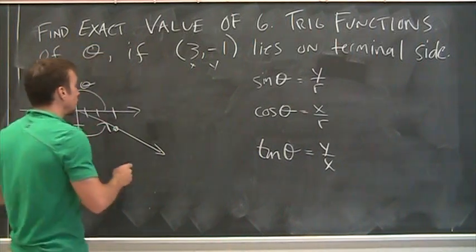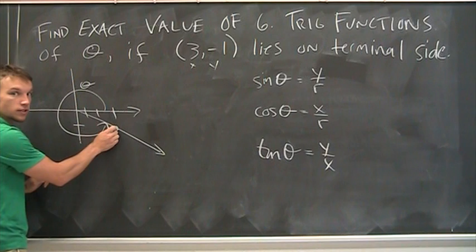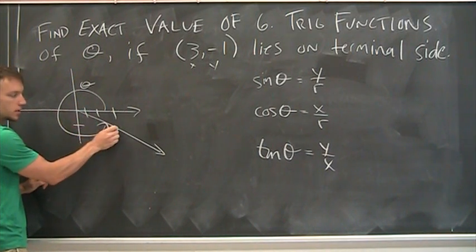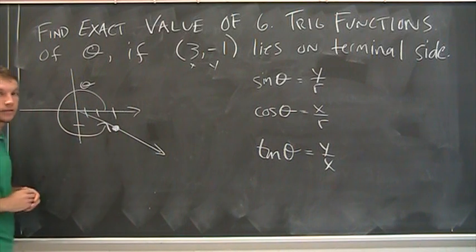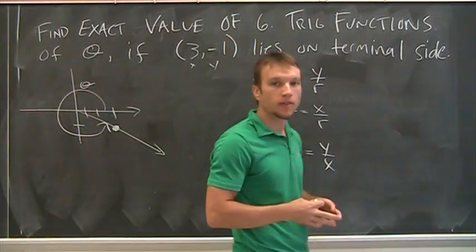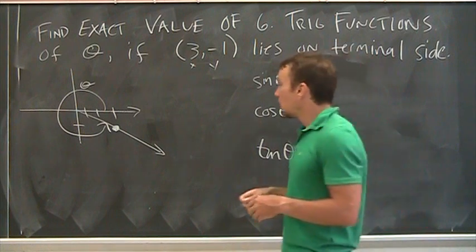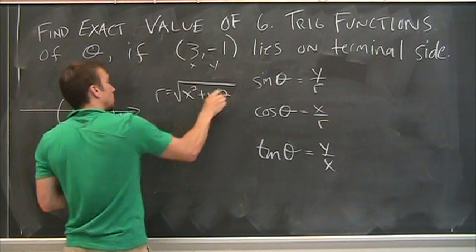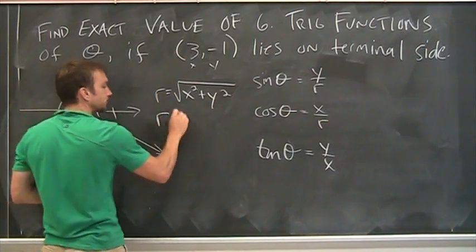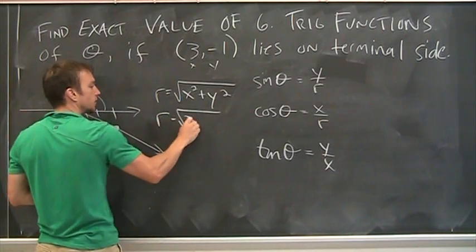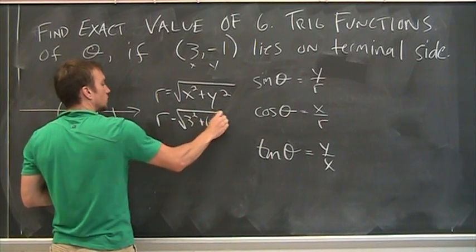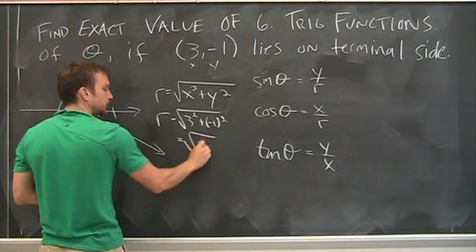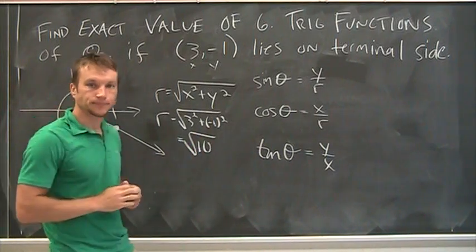So again, we need to find r, and r is simply the distance. This is just right triangle trigonometry. r is just the distance from the origin to that point, right? So basically, I could just draw a right triangle. It's really the Pythagorean theorem, right? r is the square root of x squared plus y squared, meaning it's the square root of, in this case, 3 squared plus negative 1 squared, which is the square root of 9 plus 1, or the square root of 10.